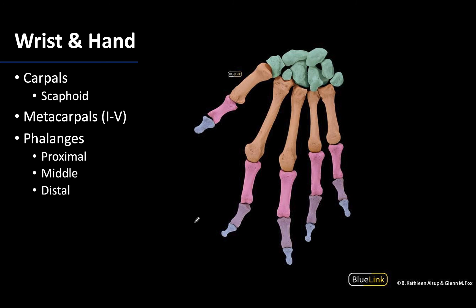Speaking of carpal bones, these are the small bones shaded here in green. The proximal row are the ones that will articulate with that portion of the radius we just saw. Three out of the four will articulate — not the small pisiform, which is a little more anteriorly placed, so it won't be articulating with the radius.